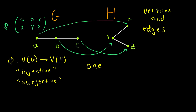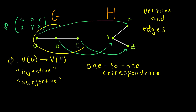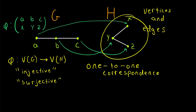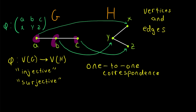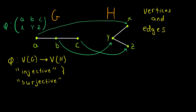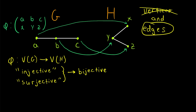Let's recap these two properties. Our function phi should be injective, meaning distinct vertices of G are mapped to distinct vertices of H — no two vertices of G are mapped to the same vertex of H. Secondly, phi should be surjective, meaning every vertex of H is getting matched to by some vertex of G. These two properties combined mean there is an exact one-to-one correspondence between the vertices in G and the vertices in H, and a function with these two properties is called a bijection, or a bijective function.